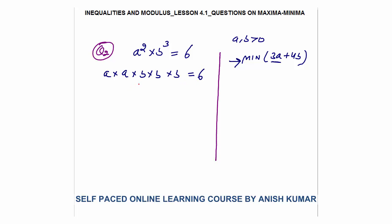If you take the sum of the two a-terms right now it becomes 2a, but we want the sum of those two terms to be 3a. So each of the two terms must be 3a/2 and 3a/2, so their sum becomes 3a. Similarly for the three b-terms: their sum right now is 3b, but we want it to equal 4b.